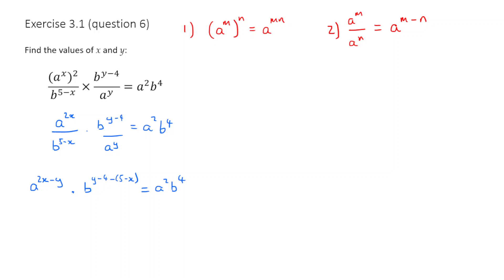All right, we're going to simplify this one more time. Here the a remains the same, so a to the 2x minus y. That doesn't change. We're just going to expand this bracket out. So we're going to have b, y minus 4, minus 5, and then minus minus x is plus x, is equal to a squared times b to the 4.